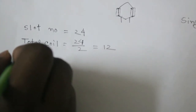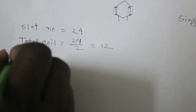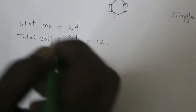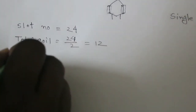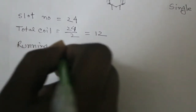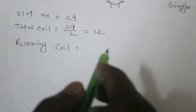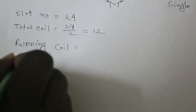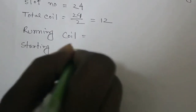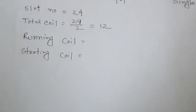We know that a single-phase motor has two coils: one is the running coil and the other is the starting coil. A single-phase motor uses these two coils.